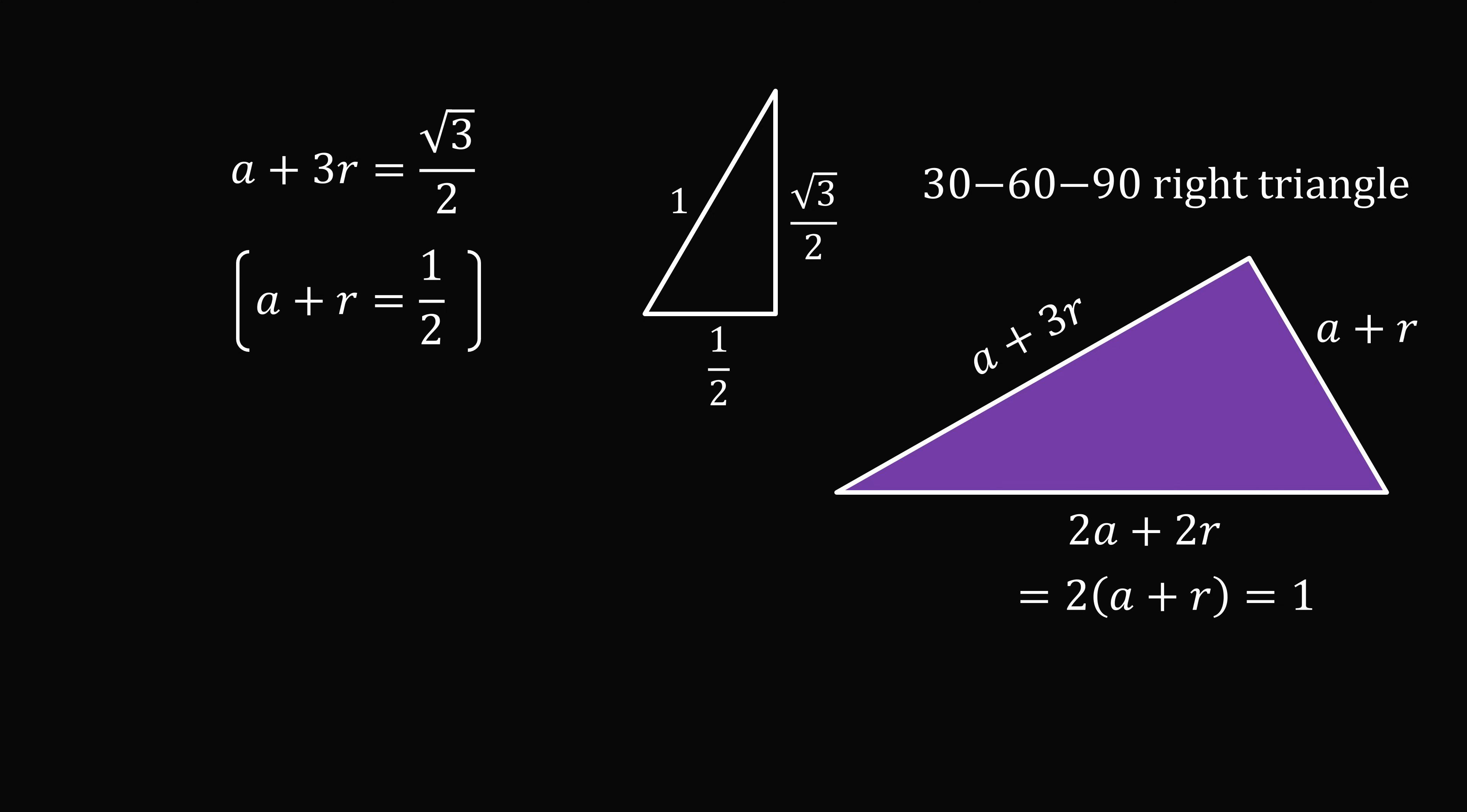So now, if we subtract one equation from the other, we can eliminate the a variable. And this will give us that 2r is equal to root 3 minus 1 all over 2. Dividing both sides by 2 gives that r is equal to root 3 minus 1 all over 4, which is approximately equal to 0.183. And that's the answer.